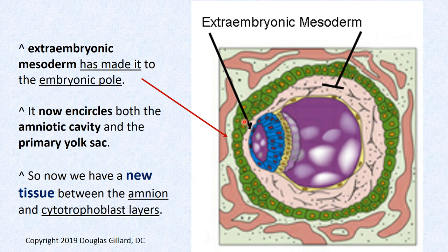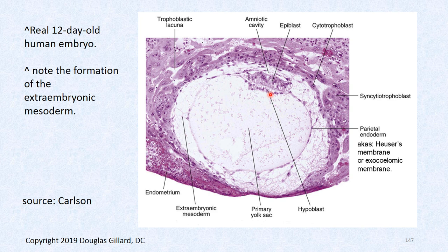Here's what we have so far: the extra embryonic mesoderm has now spread between the amnion and the cytotrophoblast layer, surrounding pretty much everything. Here's a real 12-day human embryo showing the extra embryonic mesoderm, Heuser's membrane as a pink layer, the primary yolk sac, the bilaminar disc with epiblast and hypoblast, and the cytotrophoblast layers going all the way around.